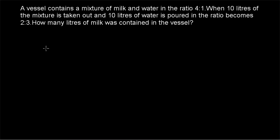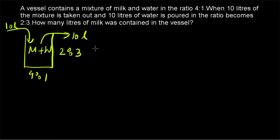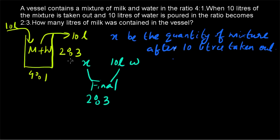Example 3: a vessel contains a mixture of milk and water in the ratio 4 is to 1. When 10 liters of the mixture is taken out and 10 liters of water is poured in, the ratio becomes 2 is to 3. How many liters of milk was contained in the vessel? Let X be the quantity of the mixture after 10 liters is taken out. This X combined with 10 liters of water gives the final mixture with ratio 2 is to 3. We can find X using the rule of allegation.